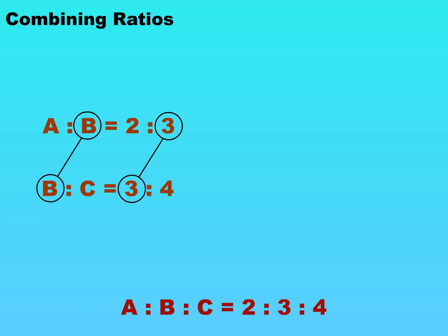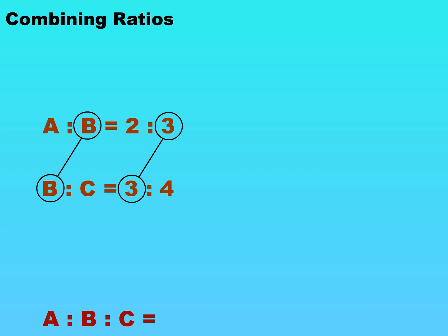In a different situation, if the number of units of B in the second ratio is different — for example, 5 — can you guess what A is to B is to C would be? In order to find A is to B is to C, we have to change the number of units of B in both ratios to the same number without changing the proportion. Since 15 is a common multiple of 3 and 5, we change both ratios so that B becomes 15 units.